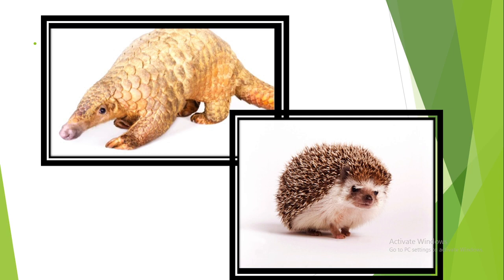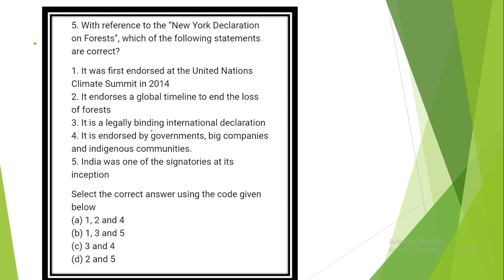With reference to the newer declaration on forest, which of the following statements are correct? The answer is Option A: 1, 2 and 4. It was first endorsed at the United Nations Climate Summit in 2014. It endorses a global timeline to end the loss of forest. It is endorsed by governments, big companies and indigenous communities.